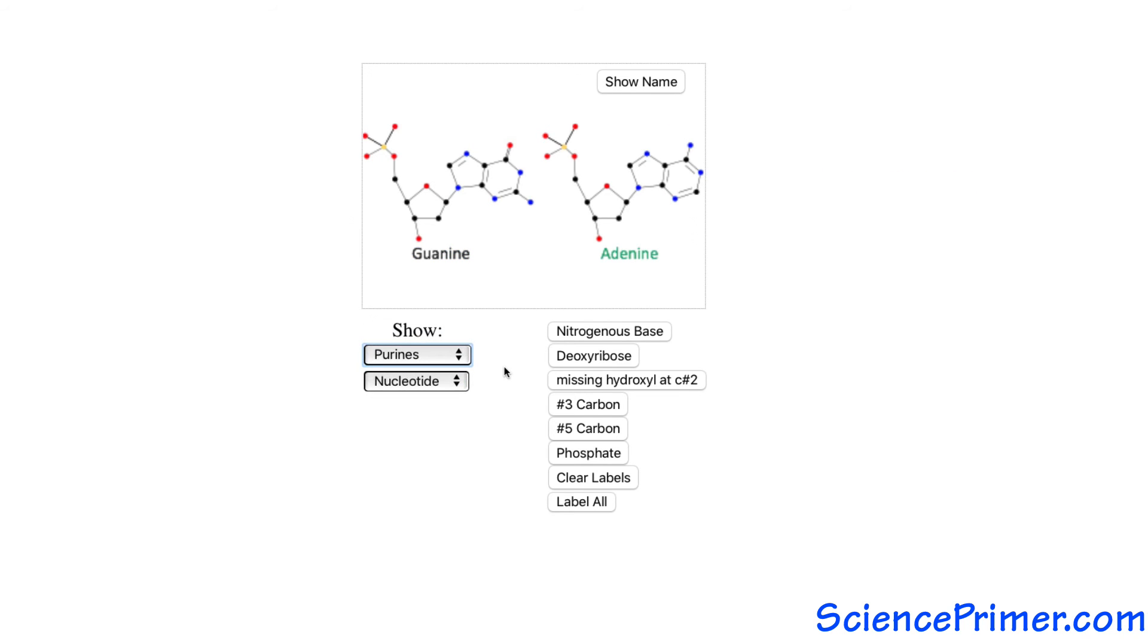And purines—guanine and adenine—each have a double ring made up of a five-atom ring attached by one side to a six-atom ring. The order of nucleotides along DNA polymers encodes the genetic information carried by DNA.